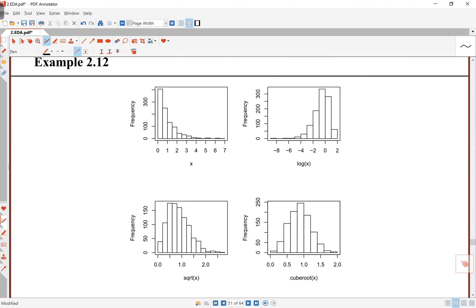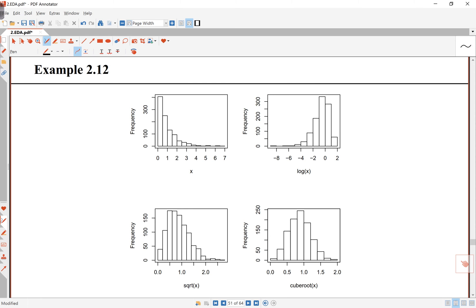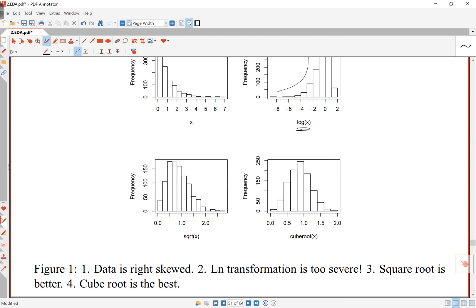Example over here is, here we've got data that's right skewed, and if I take a look at the log, it actually now becomes left skewed. So the log is quite extreme. If I look at square root, it has improved the symmetry, but it's still a bit left skewed, but cube root makes it fairly symmetric. So this is the best over here, cube root.